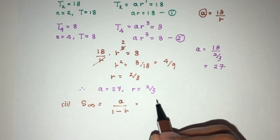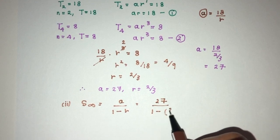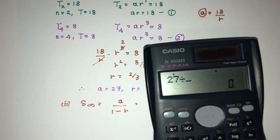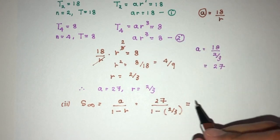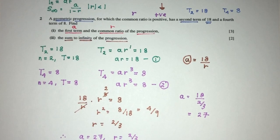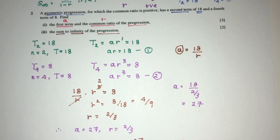a is given to, or was found to be 27, divided by 1 minus r is 2 over 3. Let's see, what do we get? 27 divided by 1 minus 2 over 3. That will be 18 as your value for the sum to infinity. Okay, and that will be the question involving the series, which is a geometric progression for these kind of questions.